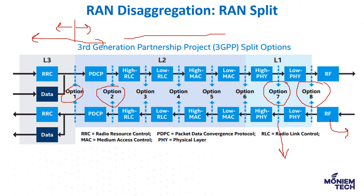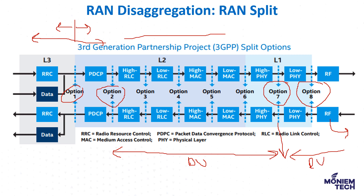Why these two options? Because they define three entities. The entity between option 2 and option 7 is called the DU — Distributed Unit. Another one is called the RU — Radio Unit — which hosts the lower physical layer and RF. The third and most important one, responsible for controlling everything, is called the CU — Centralized Unit. Together, CU, DU, and RU replace what was a single eNB node in 4G.